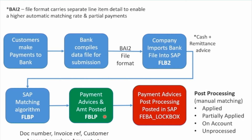If something isn't able to post automatically, there's a post-processing procedure to do the matching yourself. During this post-processing phase, if everything matches the incoming payments from the file will be automatically applied to the invoices — posted, matched, and cleared. If something only partially matches it could be partially applied.